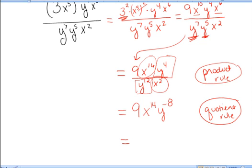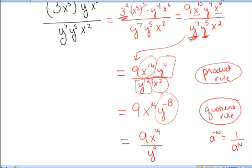Finally, I want to rewrite the expression with only positive exponents. Remember the rule says if a is raised to the negative n power, that's the same as 1 over a raised to the positive n. So I have y raised to the negative 8 up in the numerator — I'm going to flip that y down to the denominator and raise it to the positive 8 power. y raised to the negative 8 means divide by y eight times in a row. Now I have completely simplified the expression and written it with only positive exponents.